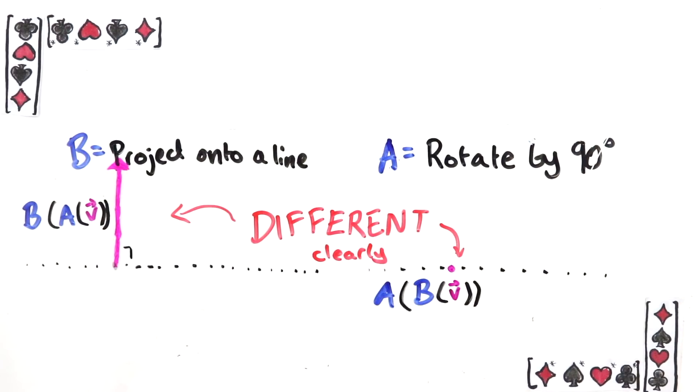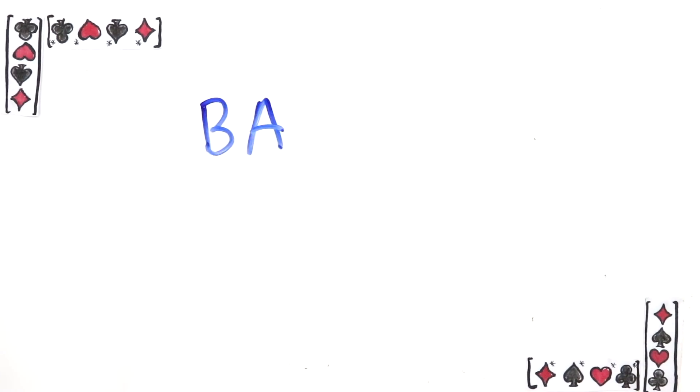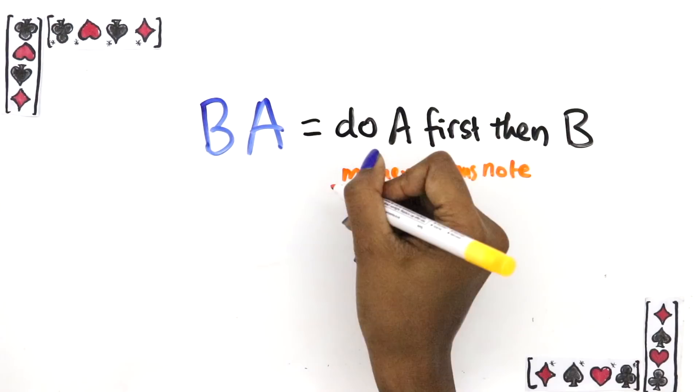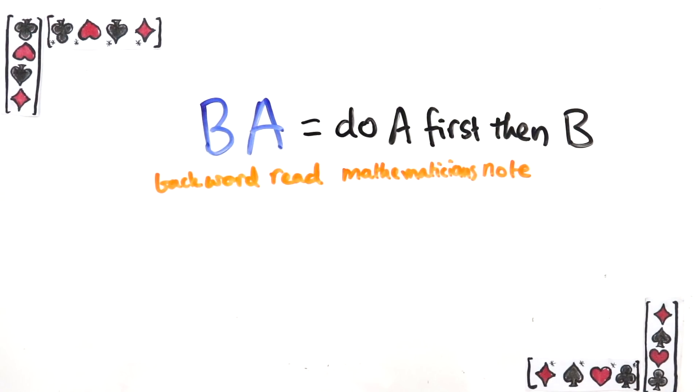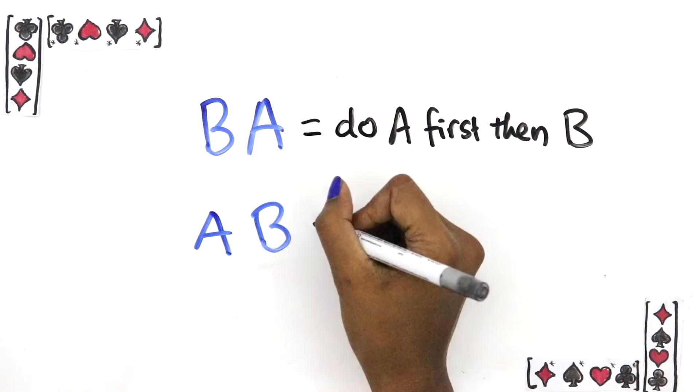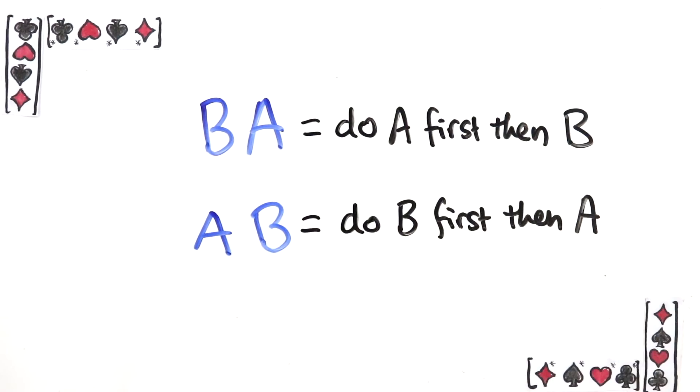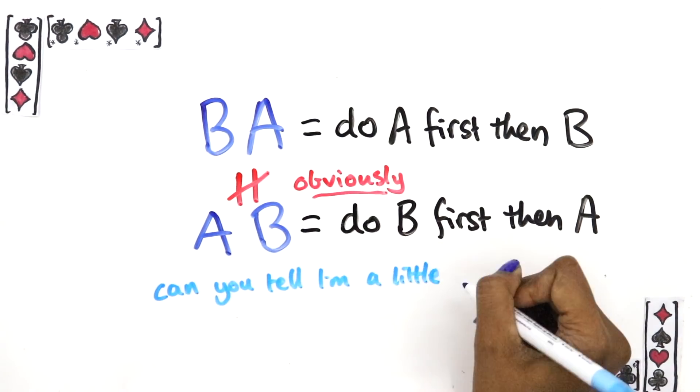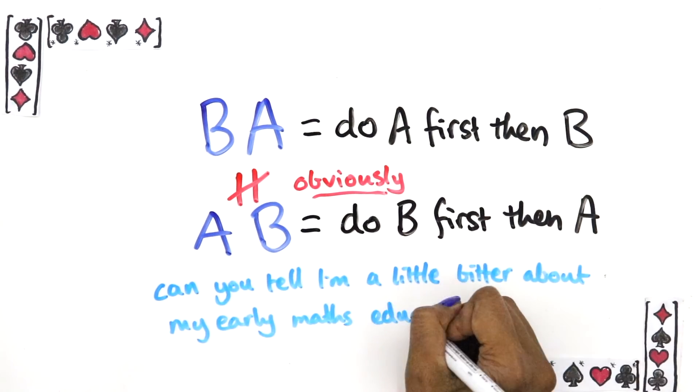So here's the big secret. When we write BA, the linear transformation that we're talking about is the one where you do A first then B. That's all it means. And as we've just seen, order matters. So this is clearly different from the linear transformation AB, since in that case you swap the order. So the statement AB doesn't equal BA is actually blindingly obvious once you understand the meaning of these things and really shouldn't be presented as a startling fact.